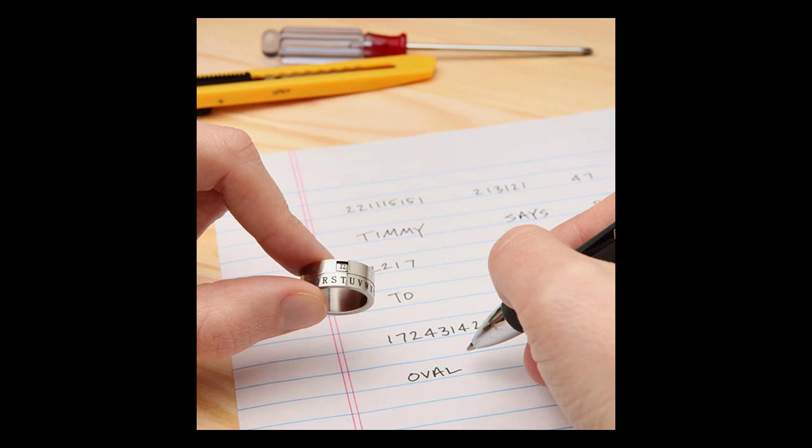This same basic mechanism substitution is what's used with secret decoder rings. Each letter is arbitrarily mapped to another letter, or in some cases to numbers, and the recipient just needs an identical decoder ring, so they can reverse the substitution.